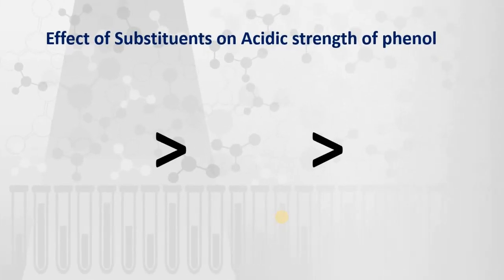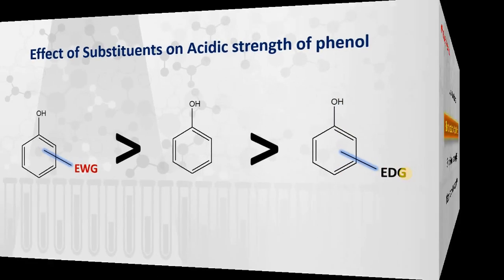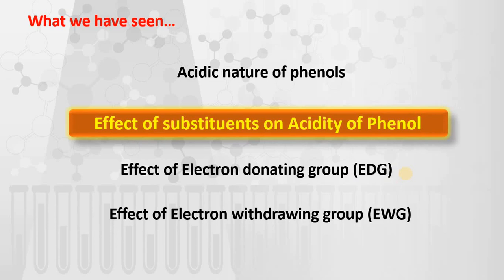To summarize: the effect of substituents on the acidic strength of phenols — when electron withdrawing groups are attached to the phenol, they increase the acidic strength, and when electron donating groups are attached to the phenol, they decrease the acidic strength. In this lecture we covered the acidic nature of phenols and the effect of both EDG and EWG substituents.